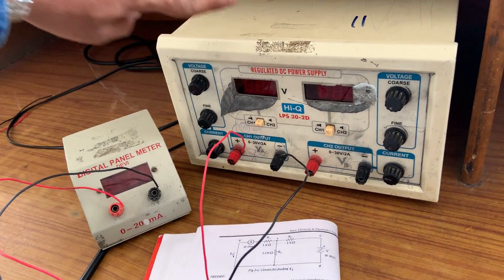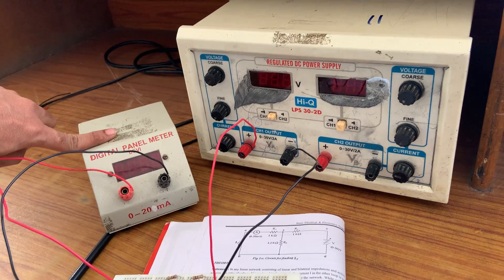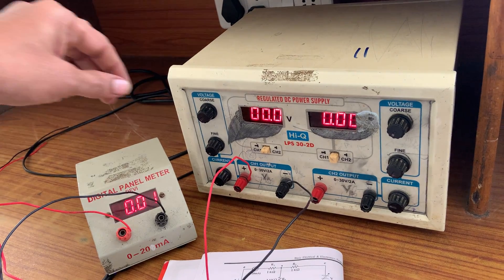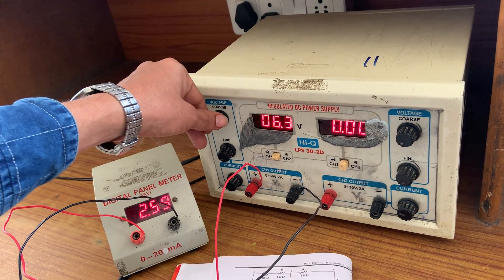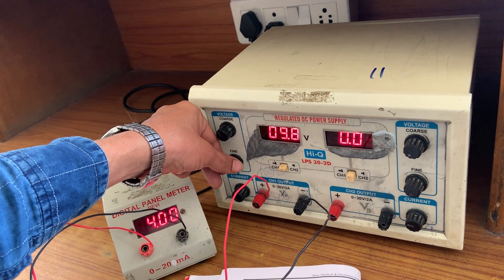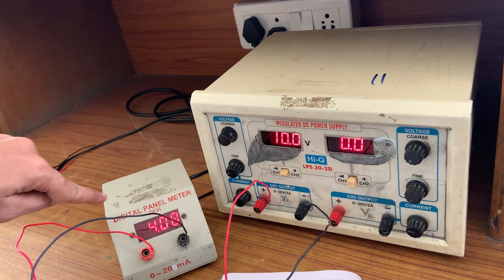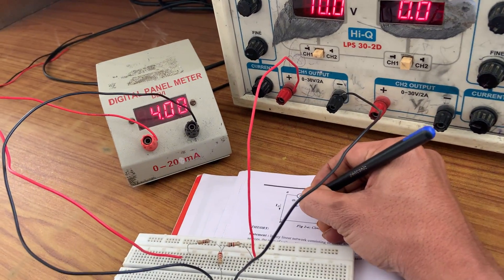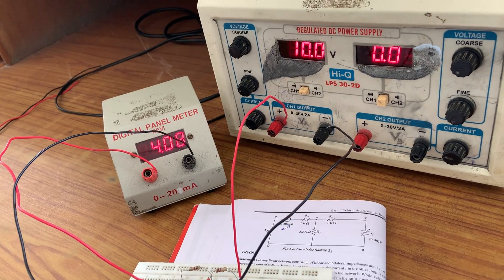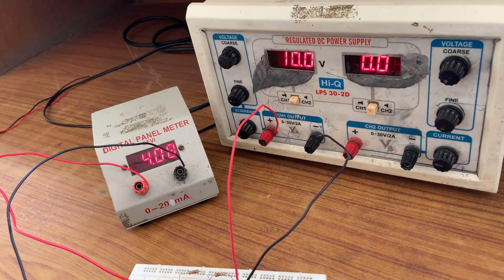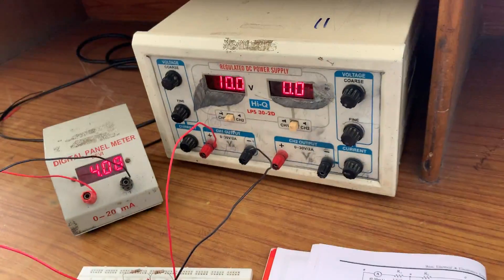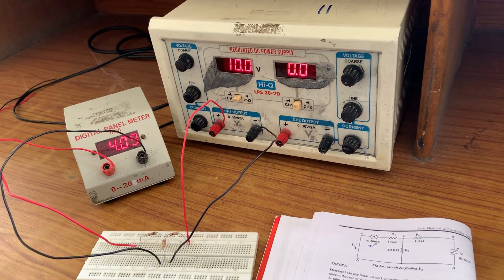Again we need to apply the supply voltage as 10 volts, and we should get the same current as before — 4.09. Now 10 volts is applied, and here we are also getting 4.08. In both cases: previous case gave 4.09, this case gives 4.08. The current is the same before and after interchanging, hence the reciprocity theorem is verified.